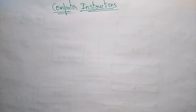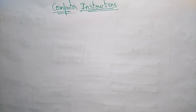Let us continue with the topics of computer organization and architecture. Coming to the next topic, which is computer instructions — in the previous video I explained about the different computer registers present in the system, and now let us see what computer instructions are present in the system.